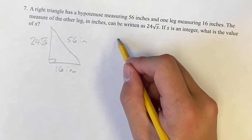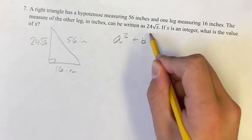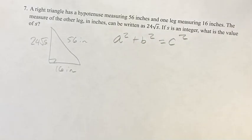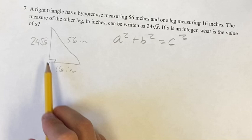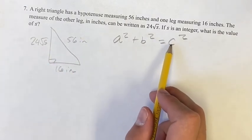So if we use the Pythagorean theorem here, not the quadratic equation, a squared plus b squared equals c squared, where a and b are the two legs and 56 of the hypotenuse is c.